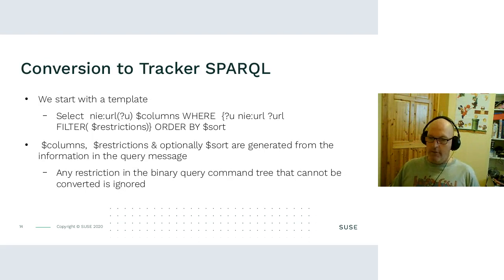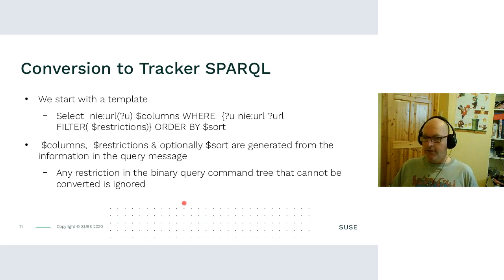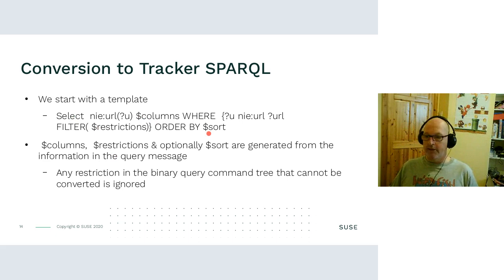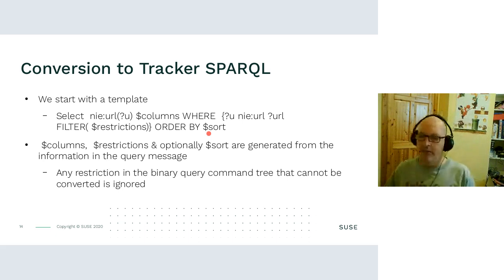To convert the binary message to something Tracker would understand, you use Tracker SPARQL — the query language it uses. What I do is start with a template containing dollar-sign placeholders for columns, restrictions, and sort — all items exploded from the binary query. You can see an example of what that kind of query looks like.